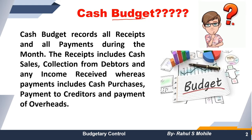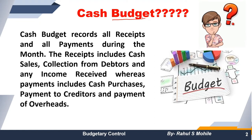Cash budget में सारे के सारे cash के transactions होंगे. Cash budget records all the receipts and all the payments — what is the actual income we will be earning and what will be the expenses we are going to pay. यह expenses और revenue का एक systematic record monthly basis पे maintained किया जाएगा, that is called as the cash budget. Cash budget में हम दो parts में record करेंगे: एक receipts और दूसरा payments. Receipts में जितना भी cash का inflow होगा वो record करेंगे, payments में जितना भी cash का outflow होगा वो record करेंगे.